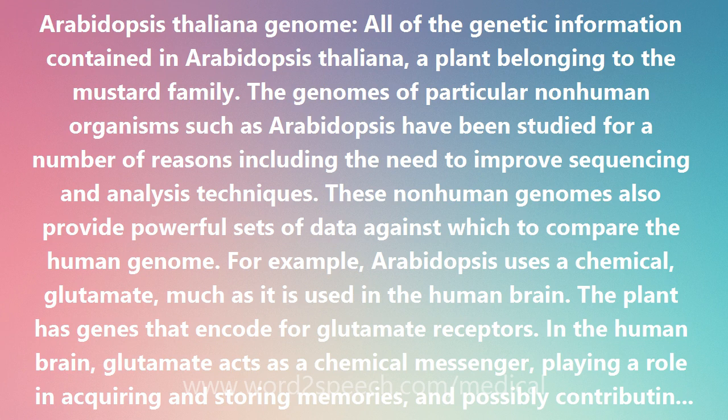For example, Arabidopsis uses a chemical, glutamate, much as it is used in the human brain. The plant has genes that encode for glutamate receptors. In the human brain, glutamate acts as a chemical messenger, playing a role in acquiring and storing memories, and possibly contributing to certain mental health ailments. Glutamate also acts as a messenger in plants, communicating the presence of light and regulating light-dependent processes.